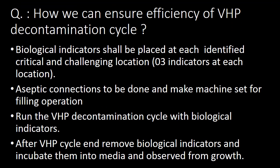Next very important question: how can we ensure efficiency of the VHP decontamination cycle? We can ensure efficiency by using biological indicators in four steps. First, biological indicators shall be placed at each identified critical and challenging location. Ideally, three indicators should be used at each location.